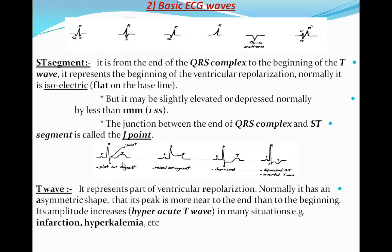Here are some different shapes of the ST segment: a flat or isoelectric ST segment, ST elevation, ST segment elevation with a different morphology, and ST segment depression with an inverted T wave. To define the isoelectric line of the ECG, we should not look at the PR interval, because in some cases like pericarditis that segment may be deviated. Instead, to define the baseline of the ECG we should look at the segment before the P wave.